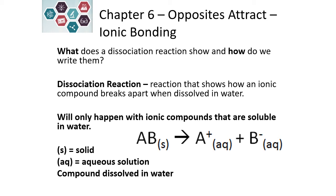A specific type of chemical reaction that occurs is called a dissociation reaction. The dissociation reaction shows how particular ionic compounds break apart into their ions when they're dissolved into water. Water needs to be present for this chemical reaction, but it is not written in the chemical formula. An important note is that this only happens with ionic compounds that are soluble in water. If the compound is insoluble, there will be no dissociation reaction that occurs.